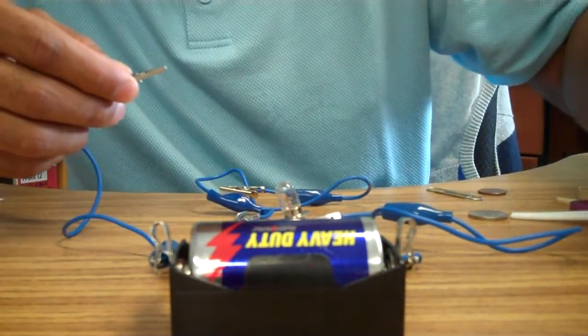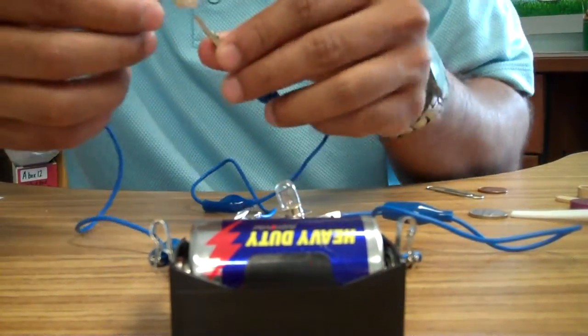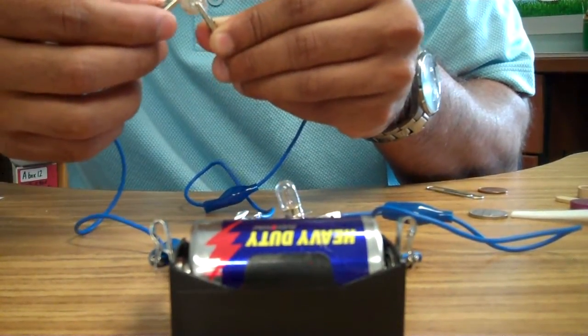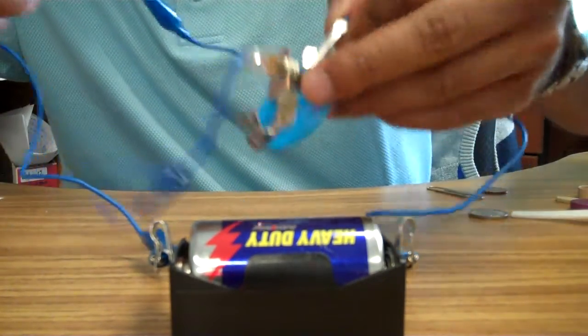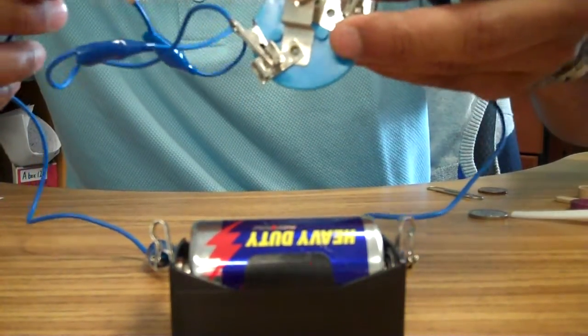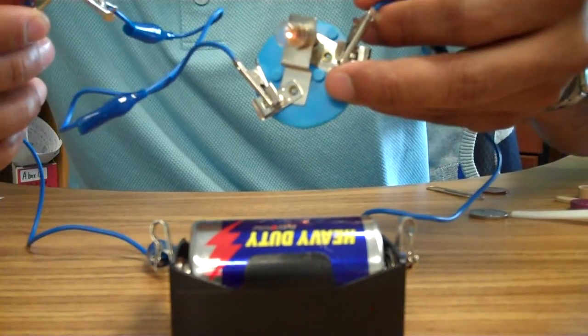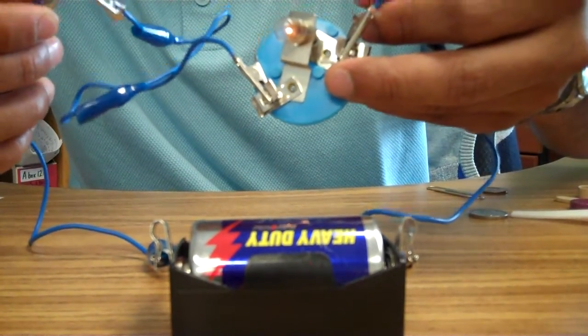Let's try a foil which we use every day to pack your lunch. And what do we see? We see that the bulb lights up. That means it passes electricity through itself. So aluminum, when we connect it, there is electricity that passes through it.